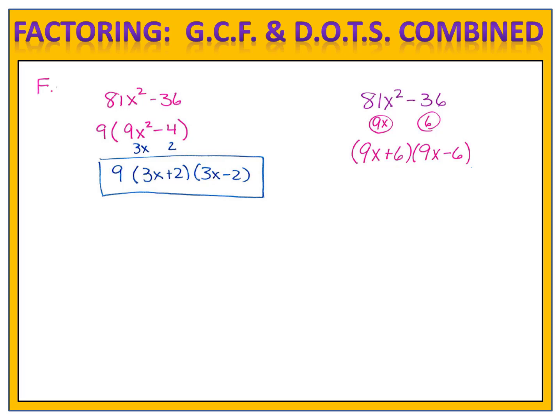That means we can factor the binomial into 9x plus 6 times 9x minus 6. But that doesn't look anything like the answer we got the first time, where we had 9 times 3x plus 2 times 3x minus 2. But notice each of the factors that we've written. In 9x plus 6, we can factor out a common factor of 3, giving us 3 times 3x plus 2. And if you look at the second factor, 9x minus 6, we can also factor out a common factor of 3, leaving us with 3x minus 2 in the parentheses. If we take those two 3s that are on the outside and group them together and multiply them, we end up with 9 times 3x plus 2 times 3x minus 2. The same solution we came up with the first time.